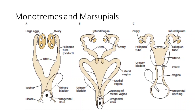Monotremes do have a placenta. When we talk about placental mammals — us, rats, mice — our placentas have more invaginations, allowing more exchange of nutrients and blood across the placental wall. There is less of that exchange in most monotremes and marsupials. As an aside, there is one group of marsupials — the numbats — that have a placenta that looks just like the placentas seen in eutherians.